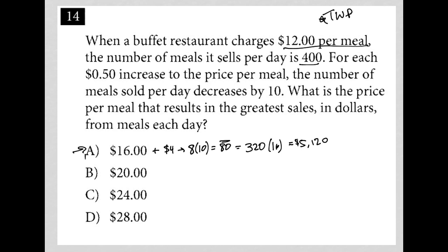Let's do the same thing for choice B. This would be an addition of $8 from our original $12, which means it will be 16 fifty cent increases. Multiply that by 10 to figure out that there will be 160 fewer meals sold from the 400 meals sold at $12 per meal. 400 minus 160 is equal to 240. So I'd only sell 240 meals at this price. I multiply that by 20. 240 times 20 is $4,800.